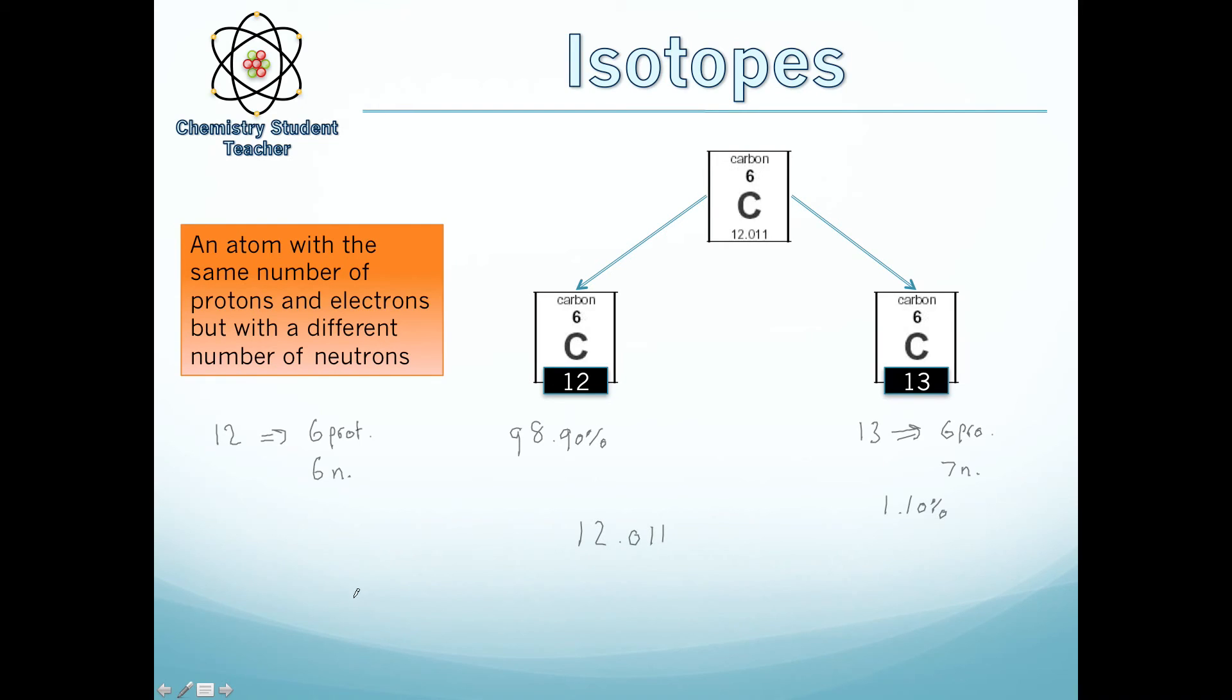For those who like maths and would like to confirm this, it's 98.90% of carbon 12 add 1.10% of carbon 13, all divided by 100%, gives you 12.011. And that's how we get the final answer of the atomic mass of an atom. This will work for anything else. If there are isotopes of, say, oxygen or nitrogen, the exact same thing will happen except you'll just have different numbers involved. If you ever see a decimal place on the periodic table under the atomic mass, it's because there are isotopes present.